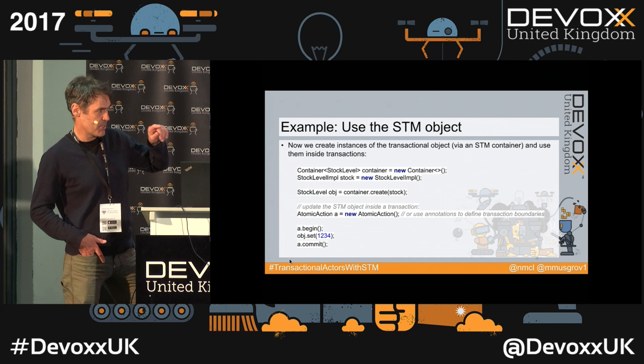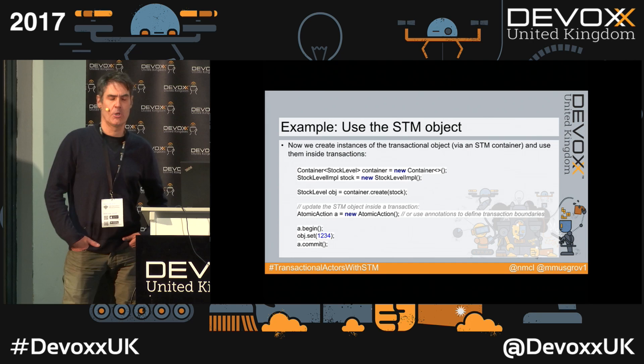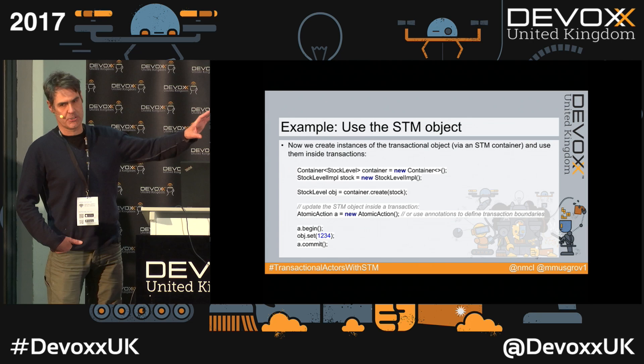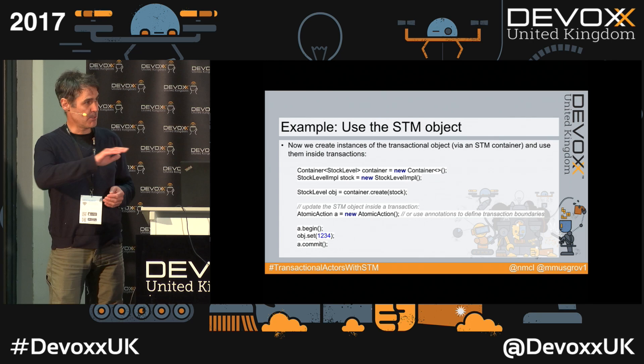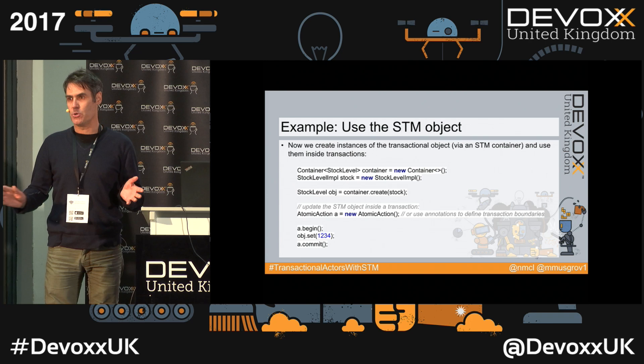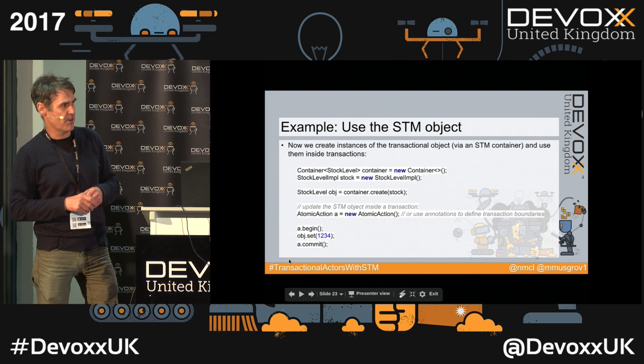There is something called nested top-level annotations — the STM runtime will actually start a transaction for you if one isn't already running, so you don't even need to manually start and stop transactions. This gives a very low barrier for entry. You can write a simple interface, mark it @Transactional and @NestedTopLevel, and reuse it like any normal Java object, experimenting with concurrency support and safety.